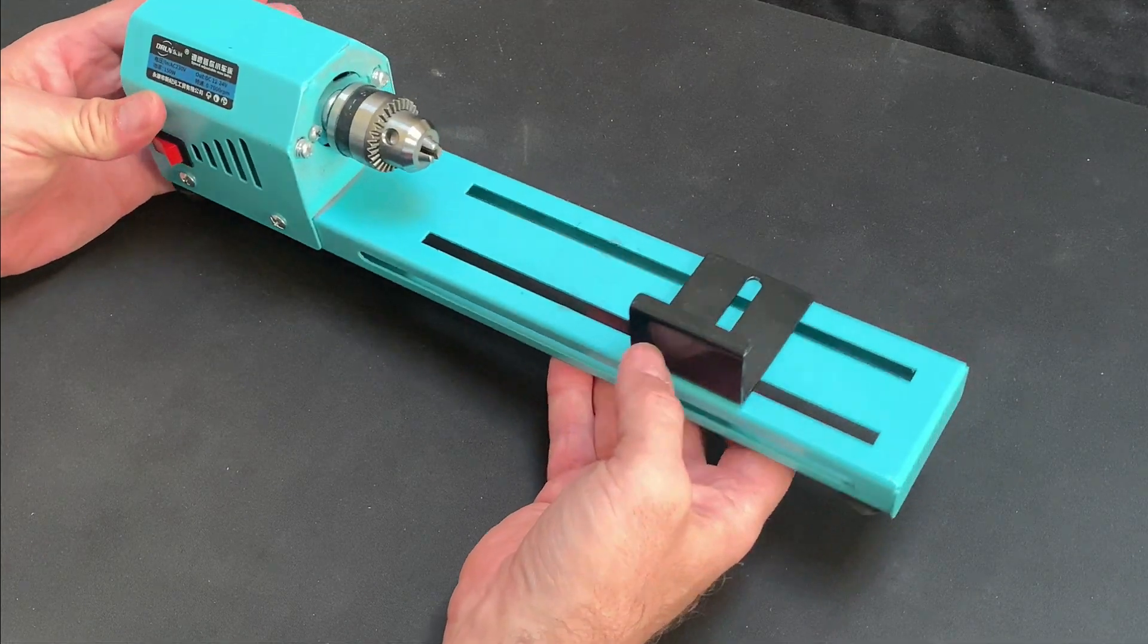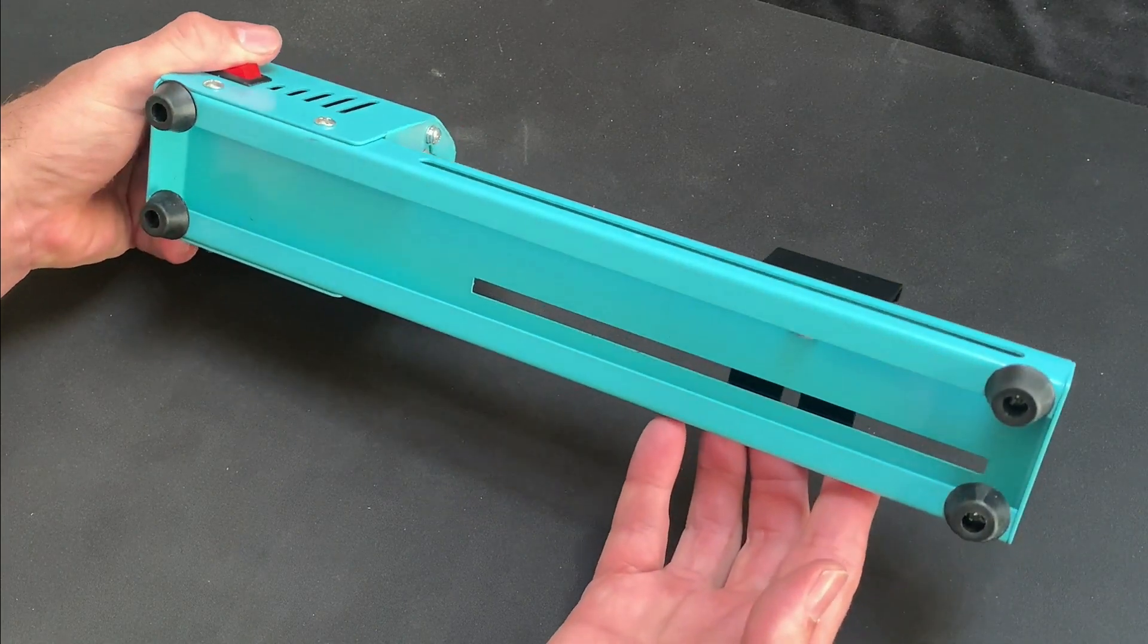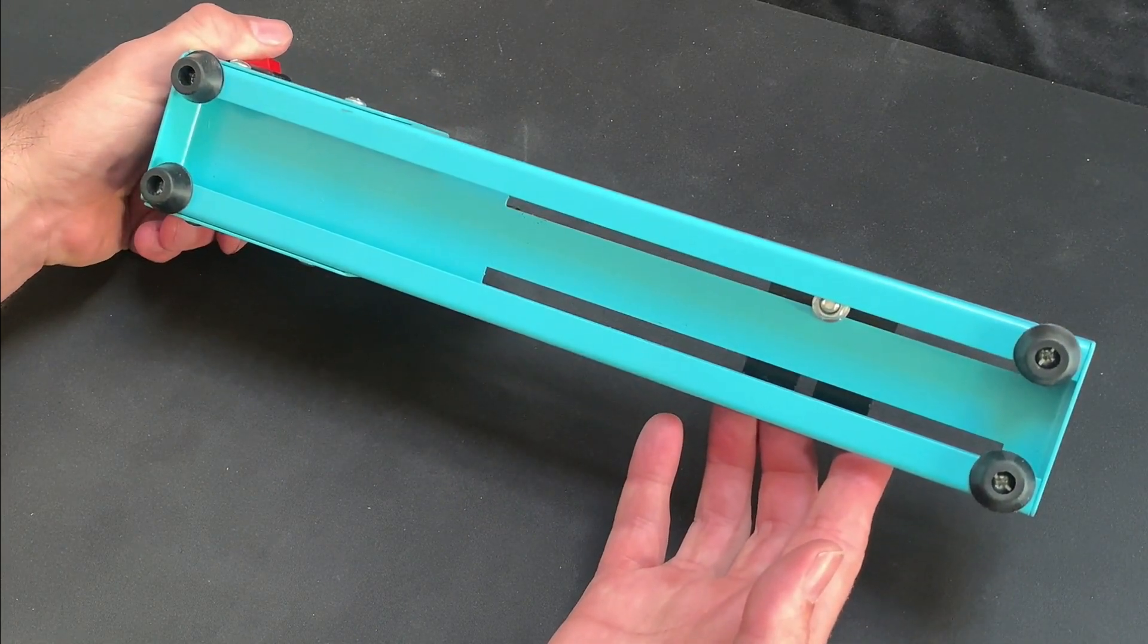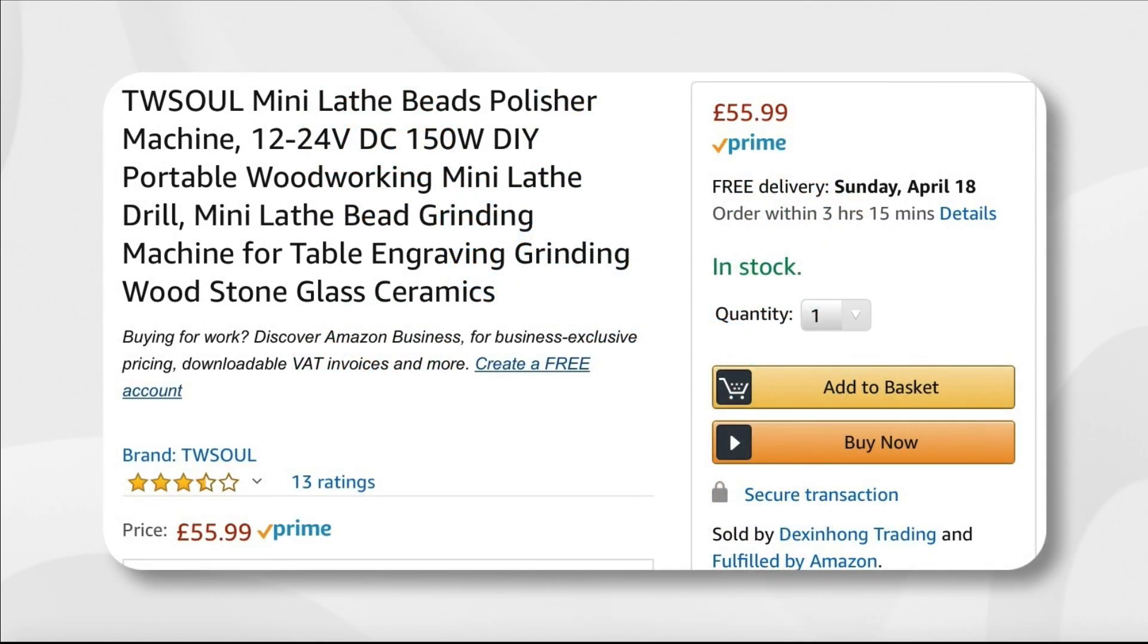This is the TW Sol 150W Mini Lathe. Compact power tools like this are designed for domestic craftwork such as bead making and small wood turning projects like making chess pieces and other small items, and I picked this one up on Amazon for £55.99.